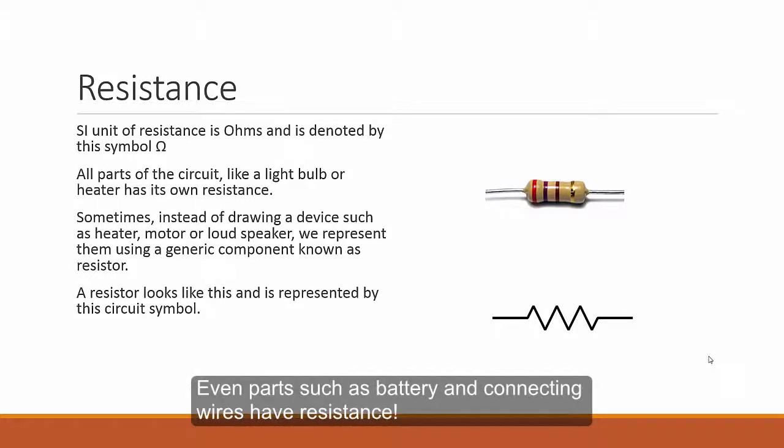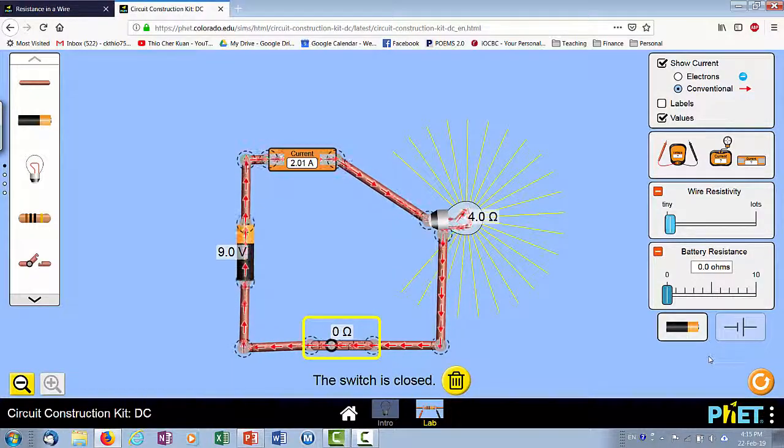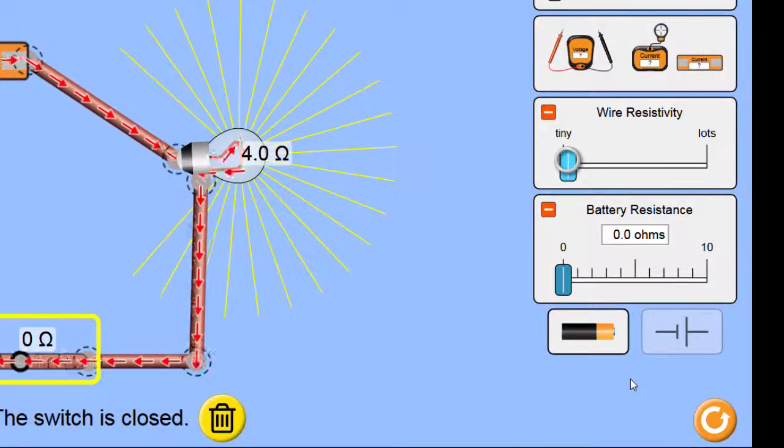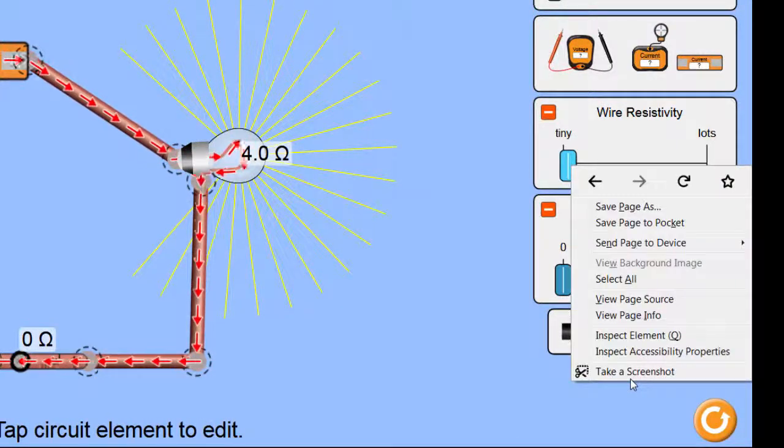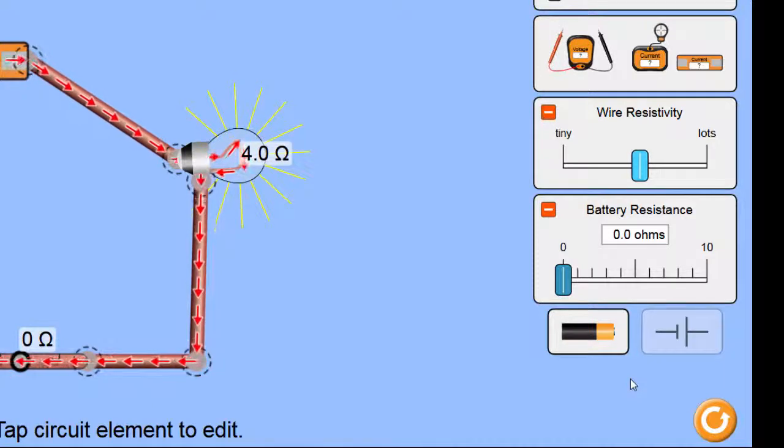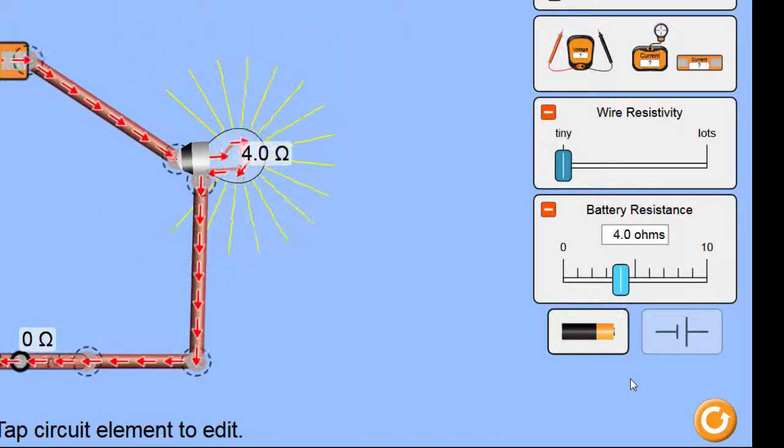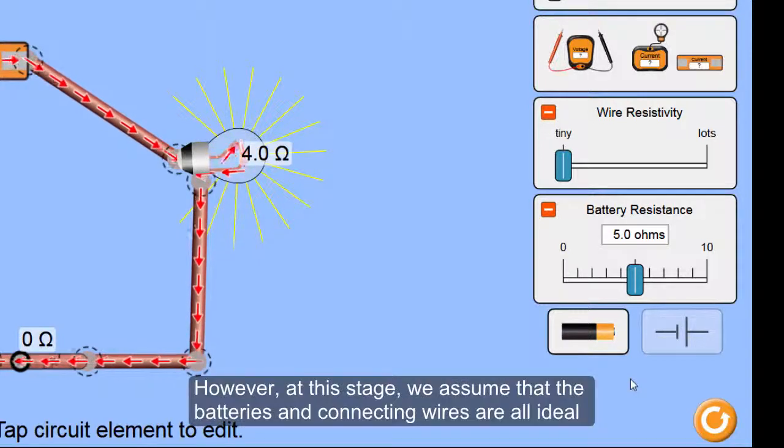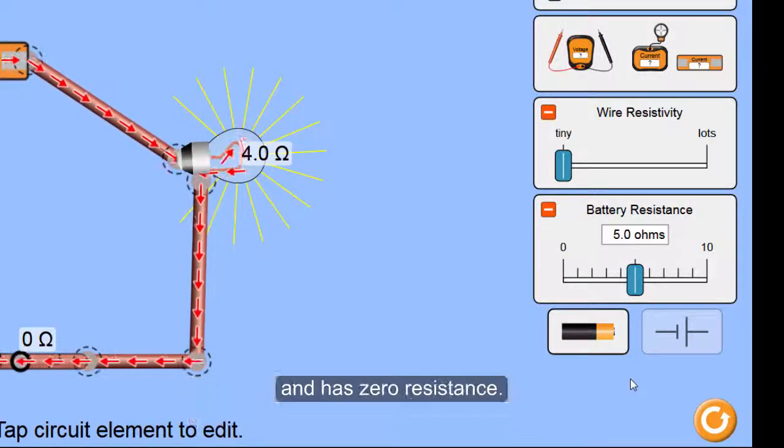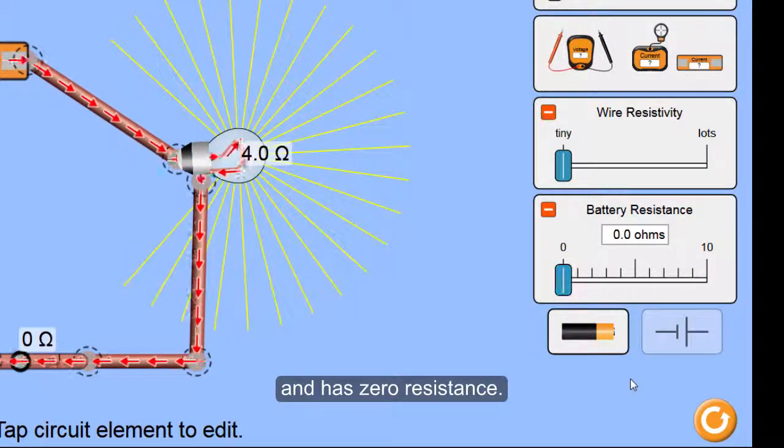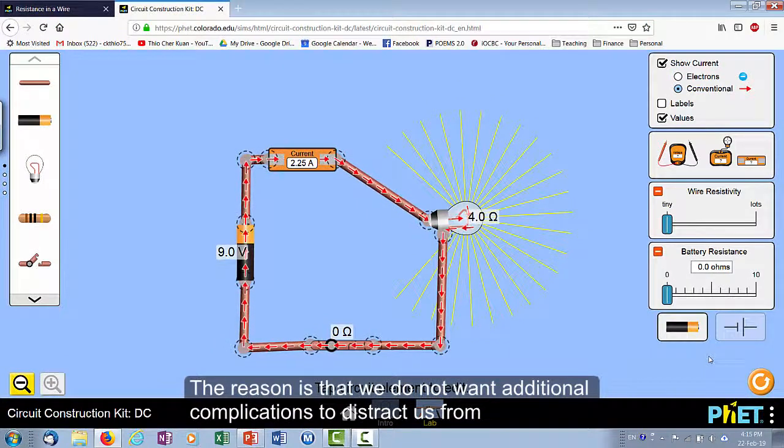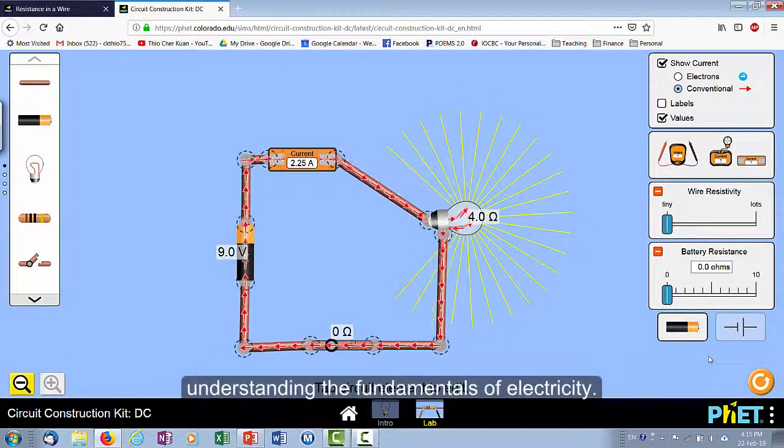Even parts such as battery and connecting wires have resistance. Looking over here, you can see that the wire resistance can be varied and you can increase it, and even though the light bulb didn't change, the current will be smaller. Or if you change the battery resistance, again the same effect. However, at this stage, we assume that the batteries and the connecting wires are all ideal and have zero resistance. The reason is that we do not want additional complication to distract us from understanding the fundamentals of electricity.